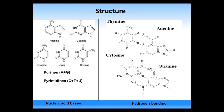Thymine is more stable than uracil, which can be converted to cytosine, potentially leading to abnormal adenine-to-cytosine binding. The base pairs bind to each other: thymine binds to adenine, uracil binds to adenine, and cytosine binds to guanine. There are two hydrogen bonds in A-T binding and three hydrogen bonds in G-C binding. Thus, the number of GC pairs in a DNA fragment raises the melting temperature, since it requires higher temperature to melt three bonds rather than two.